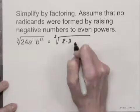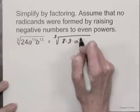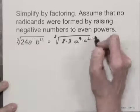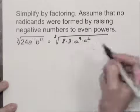a to the 11th power is a to the 9th power times a squared. And a to the 9th power is a perfect cube.